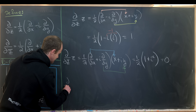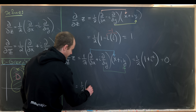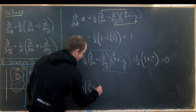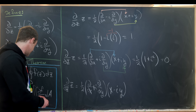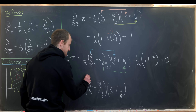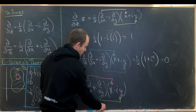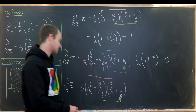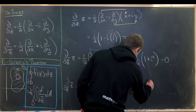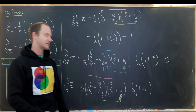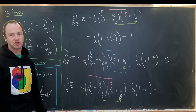Let's also take the partial with respect to z̄ of z̄ to round this all out. That's one half times (∂/∂x + i·∂/∂y) applied to x − iy. The partial with respect to x acts on x giving 1, and the partial with respect to y acts on −iy giving −i, so we have i·(−i) = −i² = 1. In the end we have one half times (1 − i²) = one half times two, which equals one. The partial of z̄ with respect to z̄ really should be one.